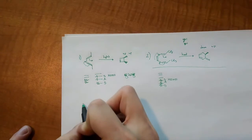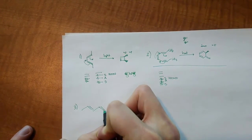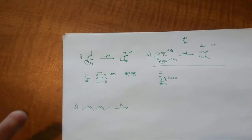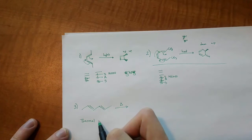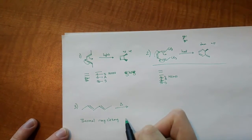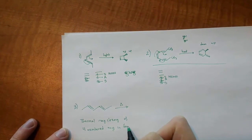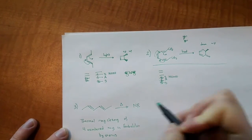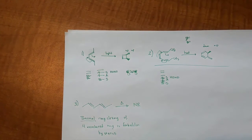So this is what I was talking about in the theory video about being an exception. Here we have this molecule reacting in heat. This is the exception: thermal ring closing of a four-membered ring is forbidden by sterics. It's fine if you do it with light — you just can't do it with heat. So write that down in your notes and don't forget it, otherwise you'll lose several points on an exam when it comes up on the final.